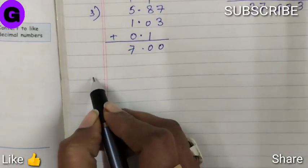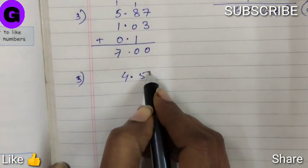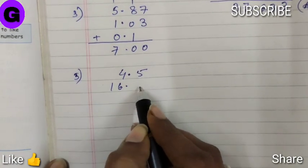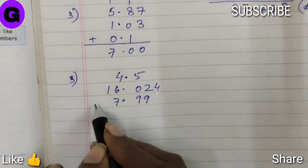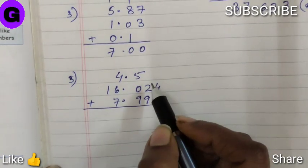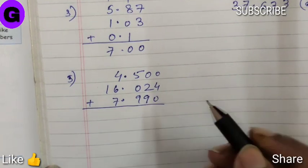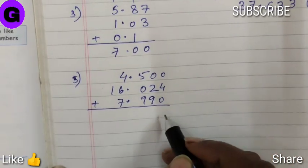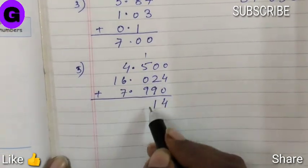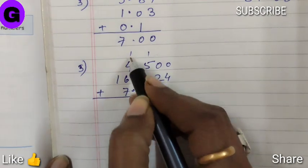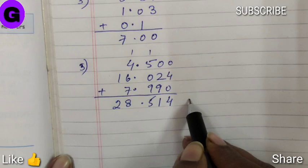Next, sum number five. It is 4.5, 16.024, 7.99. We need to add them. So as I have already explained earlier, the vacant place, we just have to write zero. If you do not write zero, it doesn't matter. It doesn't make any difference. So now we are going to add them. 4, 15. So the answer is 28.514.